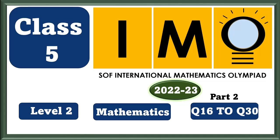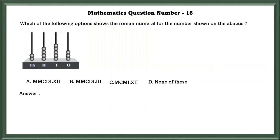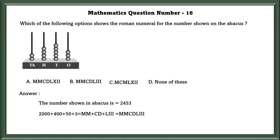Class 5 IMO Level 2 Mathematics, question number 16: Which of the following options shows the Roman numeral for the number shown on the abacus? The number shown on the abacus is 2453, that is MMCDLIII.